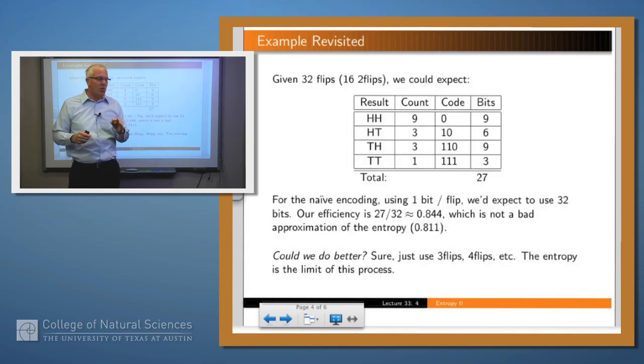Given our encoding then, we can build this table and notice that we get HH on average nine times and we're using one bit for each time. So that means for these 16 big experiments, we're going to use nine bits for HHs. For HT, we see that three times and we use two bits each time, so we'll use six bits, and so on. You build this table and we add all that up and we get 27 bits.